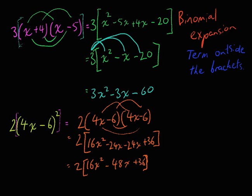And then last step, 2 times 16x squared is 32x squared. 2 times negative 48x is negative 96x. And 2 times positive 36 is positive 72.